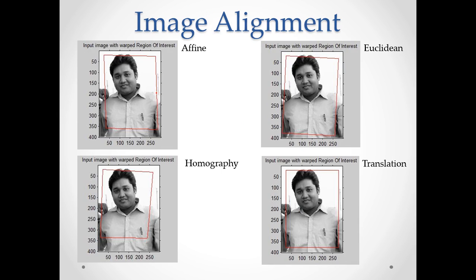These are the four types of transformation. The first is affine transformation — one point is fixed and the other two points are stretched, making this deformation different from translation. Translation is simply shifting a pixel in the x or y direction. Euclidean transformation is an example of rotation. Homography is a mixture of all sorts of transformations and is particularly important because it takes a larger amount of time for the algorithm to converge, as we will discuss when we walk through the code.